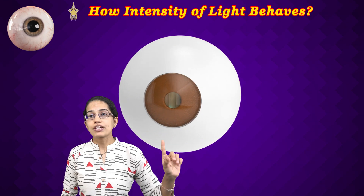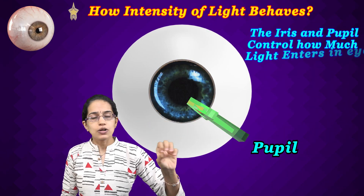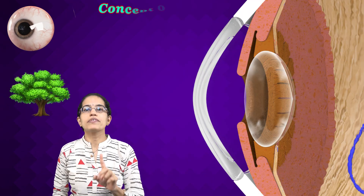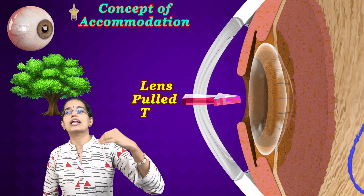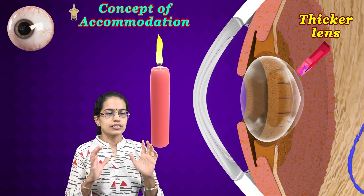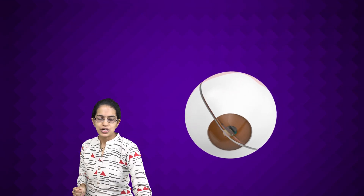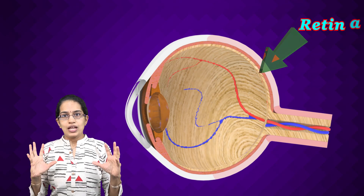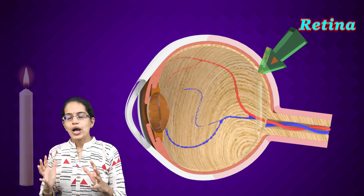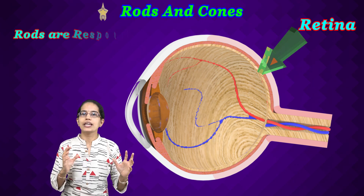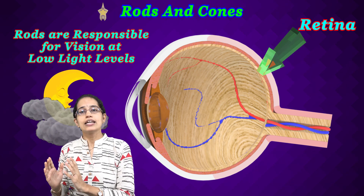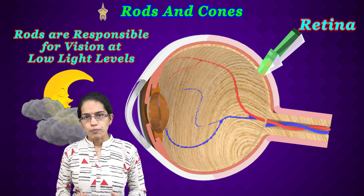To summarize so far: the first concept is intensity of light, where the pupil constricts or relaxes; the second is accommodation, where the lens becomes thin for distant objects and thicker for near objects. The next important concept is the retina — the point where image formation takes place. The retina contains rods and cones. Rods provide clear vision during night or low-light conditions.